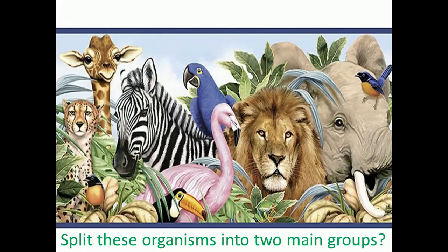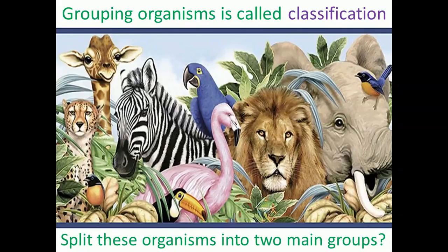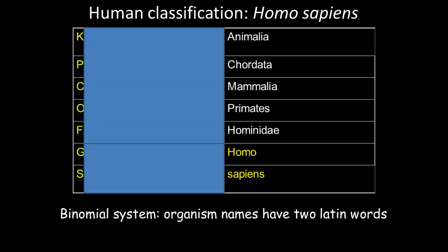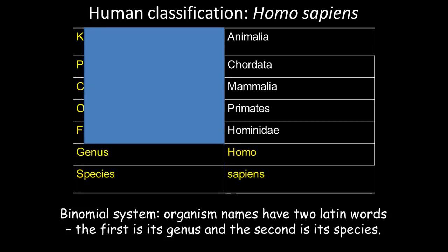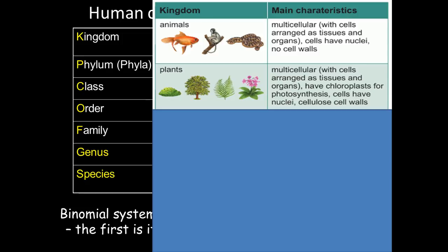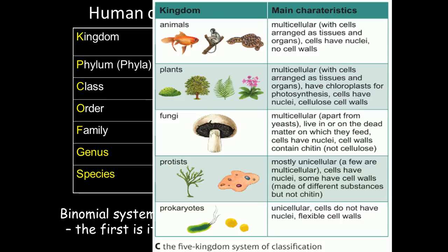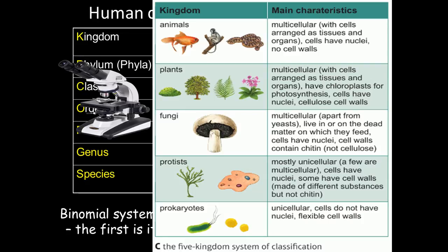We can split organisms into animals and plants, and when you group organisms this is known as classification. In the binomial system, organisms are named using an international scientific name involving two words — the first word is the genus and the second is the species name. For instance, humans are known as Homo sapiens. When we classify humans, we come under the animal kingdom. There are five kingdoms: animals, plants, fungi, protists, and prokaryotes, and organisms are grouped into these five kingdoms based on their characteristics.